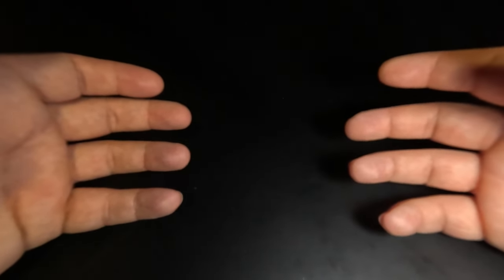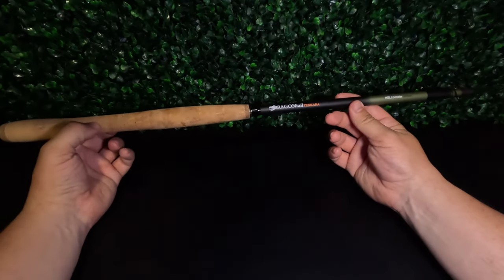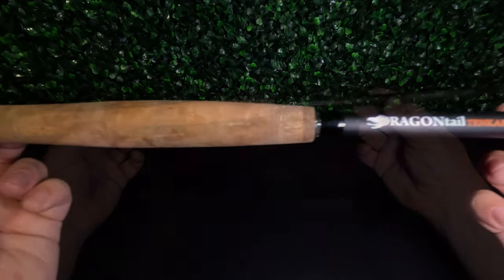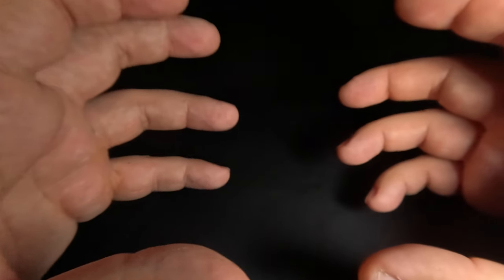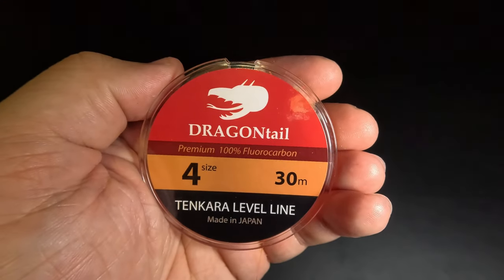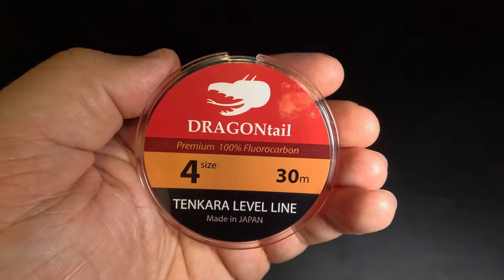All right, to get started here, we're just going to need a handful of things. First and foremost, you're going to be needing a Tenkara rod. Today I'm going to be creating a level line for my Dragontail Hellbender. Next, you're going to need some level line. Today I'm going to be using Dragontail's high visibility orange level line in size four, but you should get the size that fits your needs.